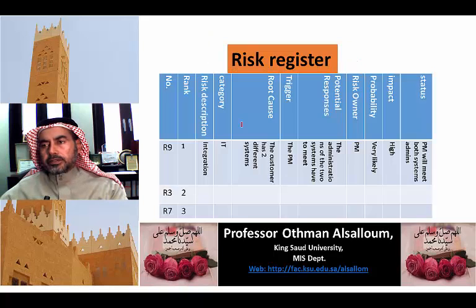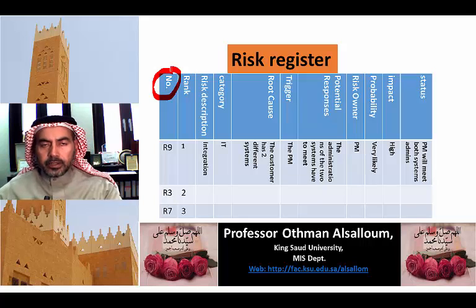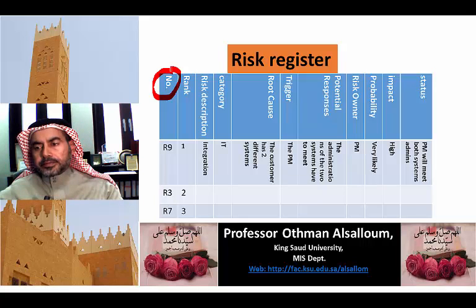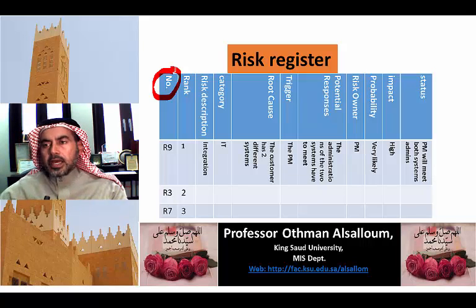We have a spreadsheet or table like this. It starts with the number of the risk item — we number all of them: 1, 2, 3, 4. R stands for Risk — Risk number 1, Risk number 2, and so on. We also rank them.